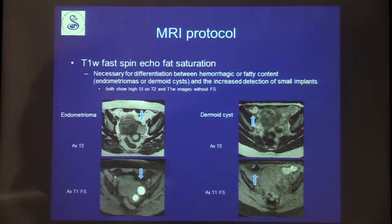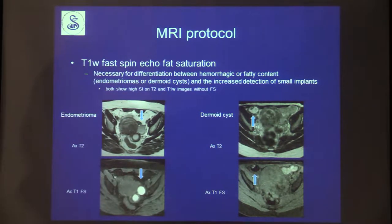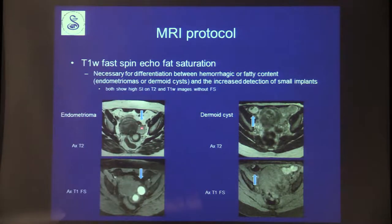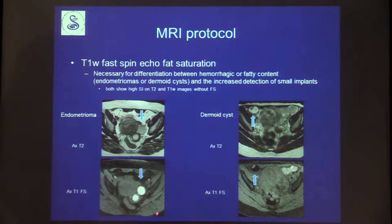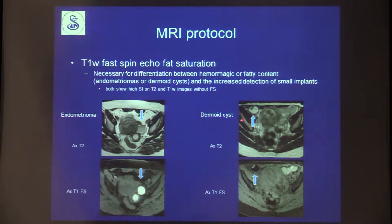Fat-saturated T1-weighted images are necessary to differentiate between hemorrhage and fat inside ovarian lesions. You can see the endometrioma here — it remains bright on T1 fat-sat — as opposed to a dermoid cyst, which was high on T2 but lost signal on T1 fat-sat images.